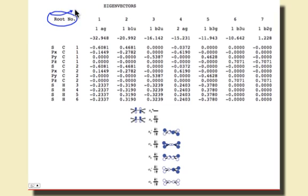The root number at the top corresponds to a molecular orbital. In other words, each column that you see, 1 through 7, is a molecular orbital.